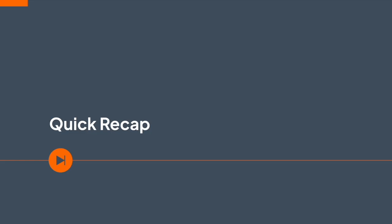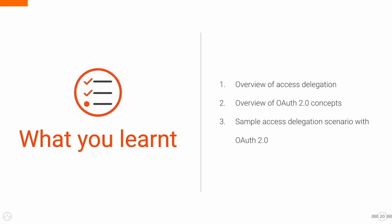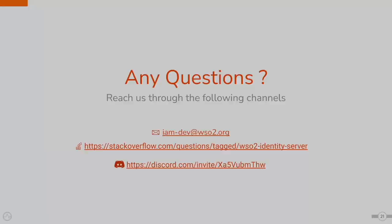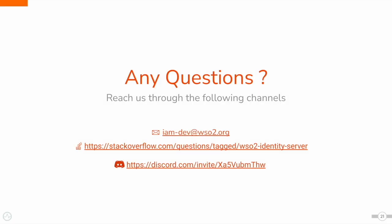We have now come to the end of this training video. Let's have a quick recap of what we learned. First, we got to know the purpose of access delegation. Next, we learned about OAuth 2 concepts on a high level. Then, we looked at a sample scenario to understand how OAuth 2.0 works. If you have any questions or need further clarification, feel free to get in touch with us. Our email is iam-dev@wso2.org. In Stack Overflow, you can tag your queries with wso2-identity-server, or you can join our Discord server using the following invite.